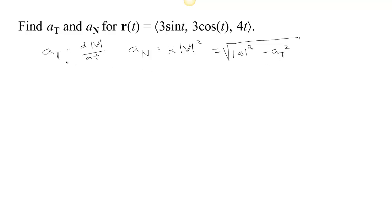So usually we find a_T first, then we find the acceleration, find the length of the acceleration and square it, subtract a_T squared, and take the square root. So let's see how this works in this case. The first thing is to find the speed.